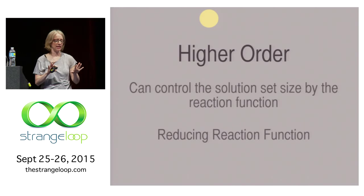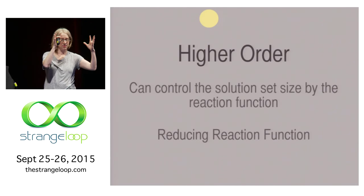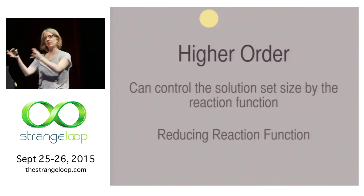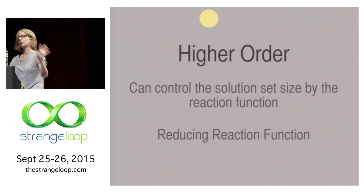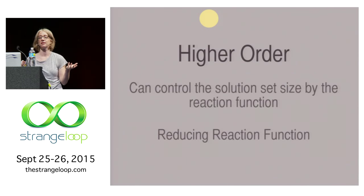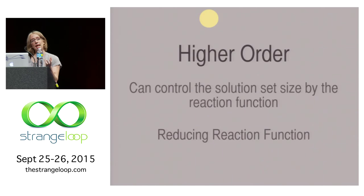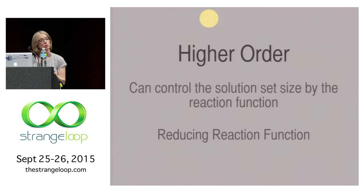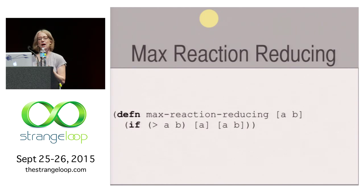Another cool thing we've seen is we're always taking in two molecules and then resulting in two molecules, and the solution size is pretty steady. It doesn't change. But we can control that solution set size by how many molecules we return. If we return less, we could call that a reducing reaction function. With a max, you would take in two molecules A and B, and instead of returning the two, you could just return the bigger of the two. If A is greater than B, you could just return A. Otherwise, you could return A and B.